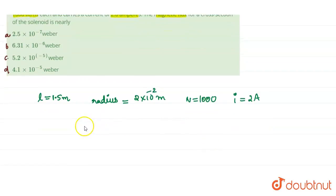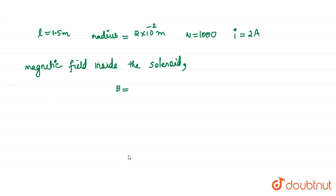Then first of all we need to find the magnetic field, then we can find the magnetic flux. So the magnetic field inside the solenoid is given by: magnetic field is equal to B = μ₀nI.